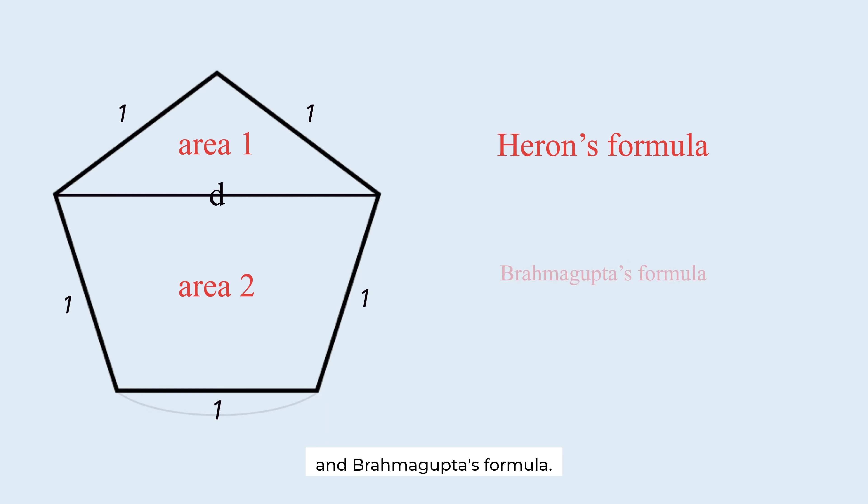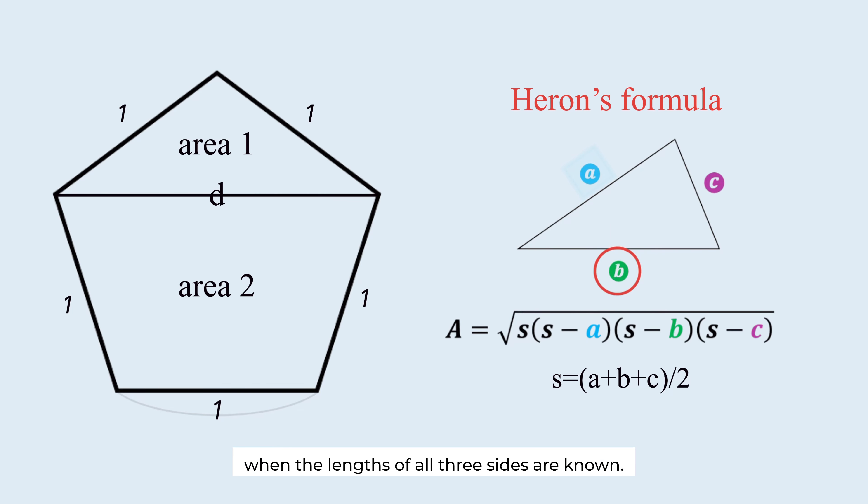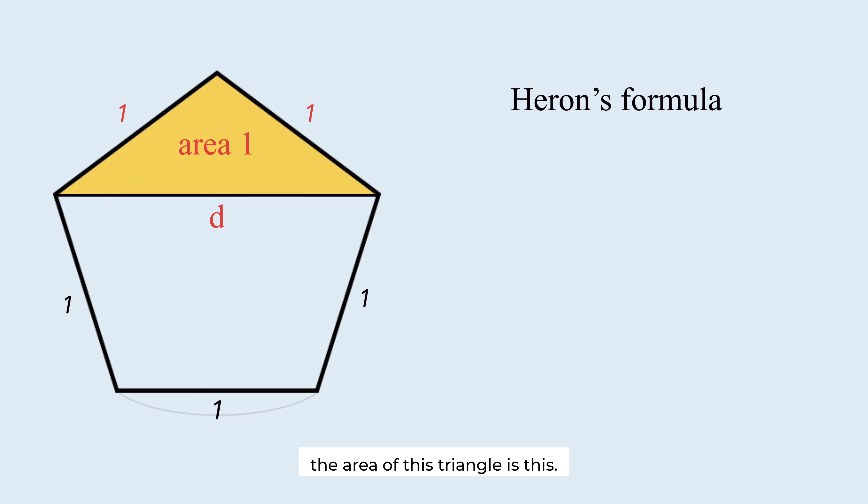Heron's formula and Brahmagupta's formula. Heron's formula is used to find the area of a triangle when the length of all three sides are known. According to this formula, the area of this triangle is this.